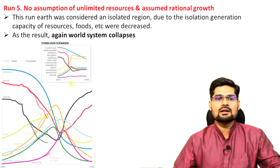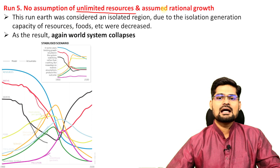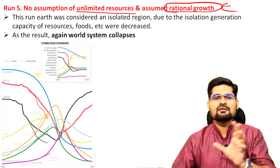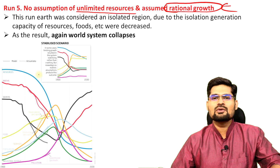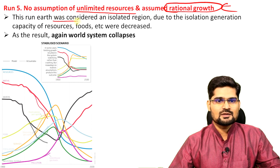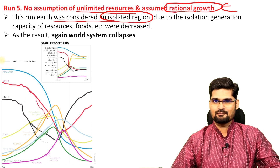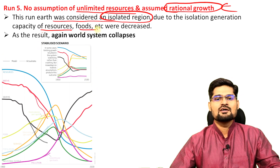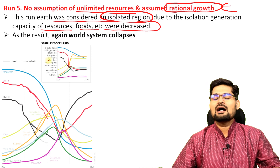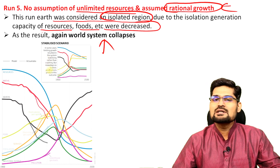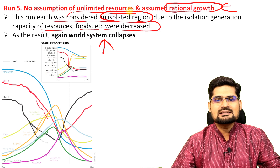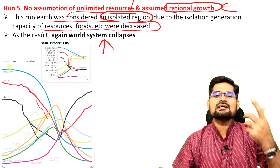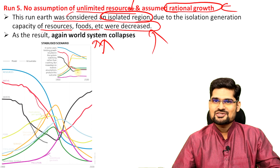The fifth run — the major one — assumed no unlimited resources and assumed rational growth instead. The earth was considered as an isolated region in this fifth run. Due to this isolation, the generation capacity of resources and food was decreased. What would happen is there is again a collapse of the world system, because people cannot exist in isolation — they will always need exchange. Still, eventually the world system collapses even if we consider rational growth everywhere.